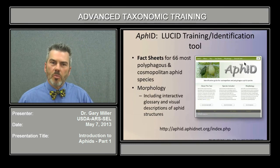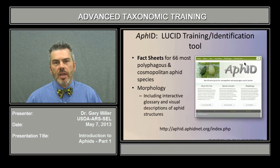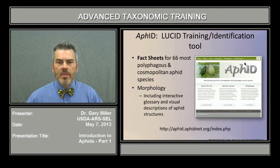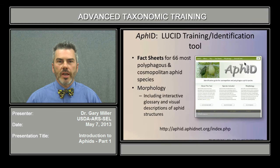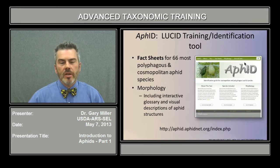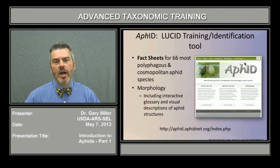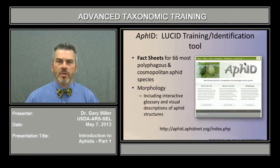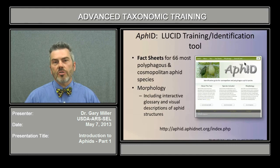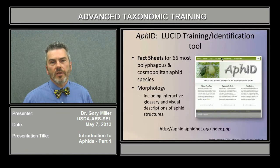That would be a traditional or paper key. But recent advances in expert systems allow us to make identifications using the lucid tool, an expert system driven by a character matrix where you may select particular characters for identification. Lucid AFID is located at aphidnet.org and includes an interactive glossary. It also includes fact sheets for 66 of the most polyphagous or cosmopolitan species of aphids. In the morphology section, in addition to the interactive glossary, there is a visual description of all the aphids covered, as well as the expert lucid tool.